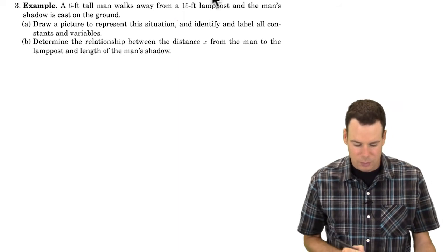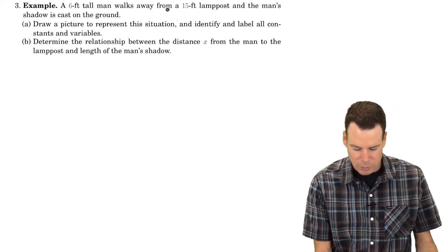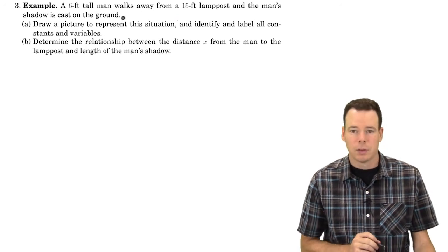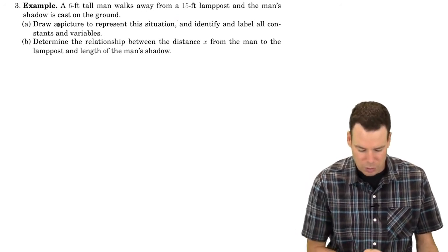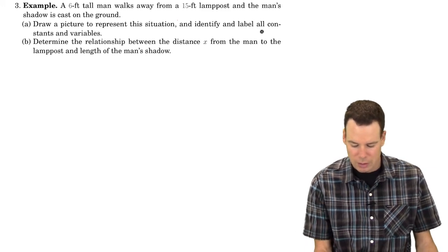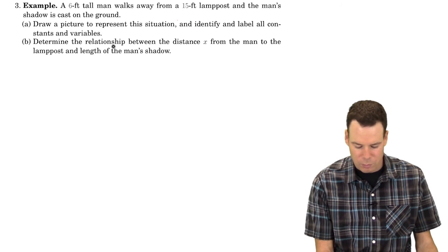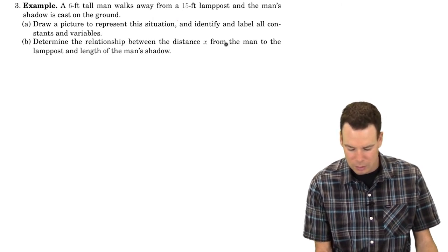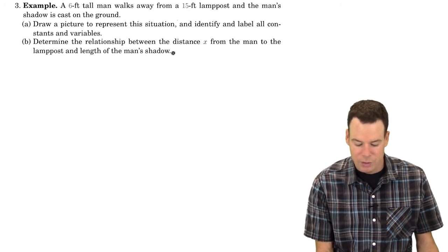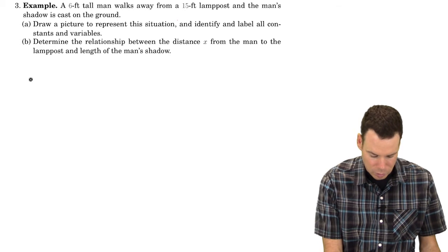In this first example, a six-foot-tall man walks away from a 15-foot lamp post, and the man's shadow is cast on the ground. We want to draw a picture to represent the situation, identify and label all constants and variables, and then determine a relationship between the distance from the man to the lamp post and the length of the man's shadow.